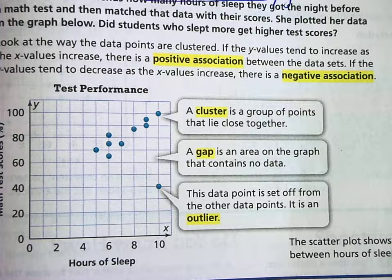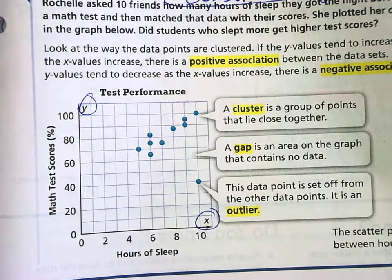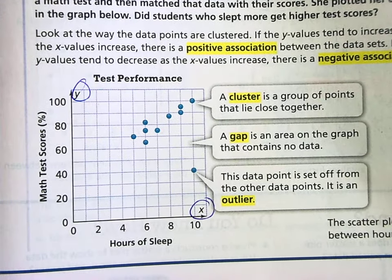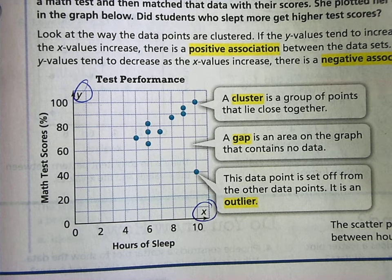So basically, scatter plots compare two variables, two sets of data, and it's kind of scattered. The data is scattered. That's why it's called scatter plot.